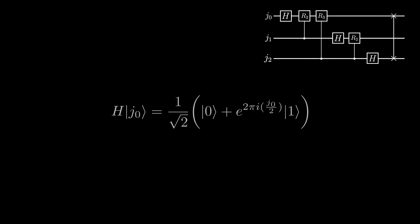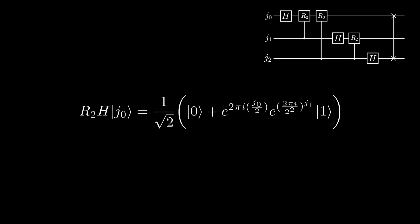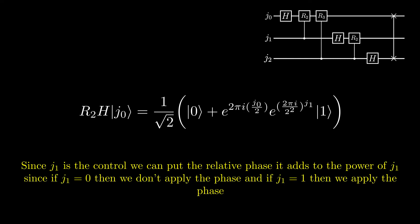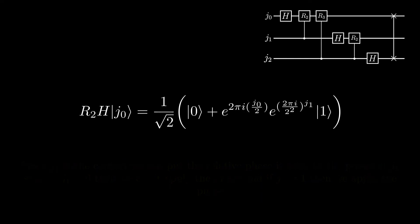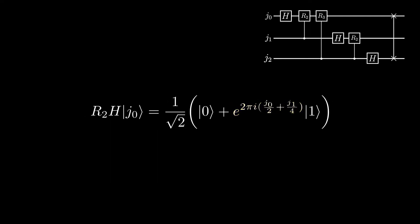Then we apply the controlled r2 gate with j1 as the control. We apply the r3 gate in the same way.